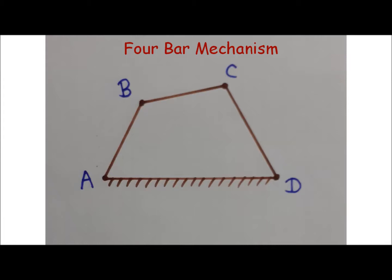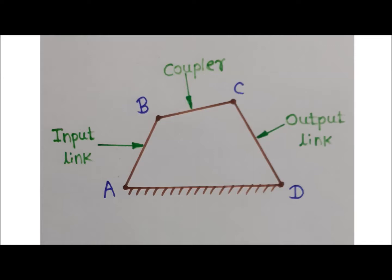Similarly, there is a turning pair between link CD and AD, so link CD can turn relative to fixed link AD. Link AB is the input link — we give input motion to it. Link CD is the output link — we get output motion from it for application purposes. Link BC is the coupler, as it couples input link AB and output link CD. The coupler is also known as a floating link, as it is not connected to the fixed link.